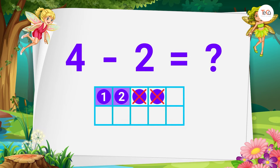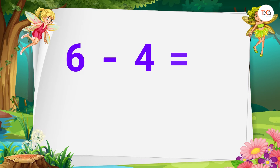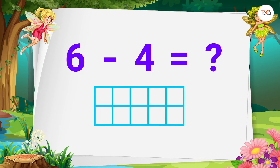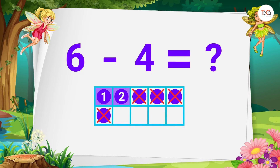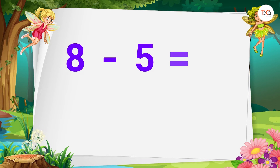Next: six minus four equals? We draw six dots, then cross out four dots. Here we have one, two — two dots left. So six minus four equals two. Next: eight minus five equals?